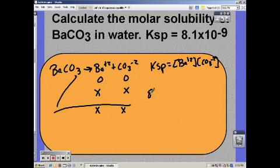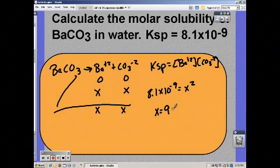Write your expression. Plug in everything you know into the expression. And so x is 9 times 10 to the negative 5th. Make sure you have units of molarity on that.